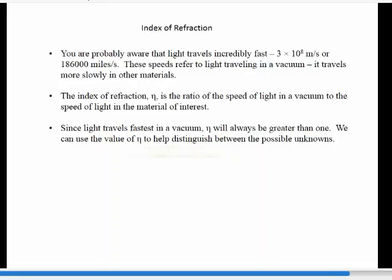Let's talk about the fourth property, the third property actually, index of refraction. You're probably aware of the speed that light travels in a vacuum at 186,000 miles a second or three times ten to the eighth meters per second. When it travels through other materials, it travels more slowly than that.